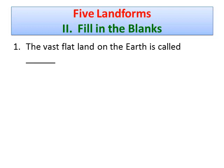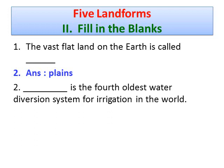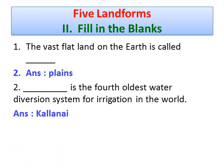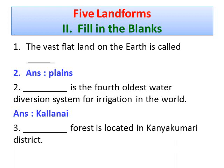Roman number two - Fill in the blanks. Question number one: The vast flat land on the earth is called plains (P-L-A-I-N-S). Question number two: Kallanai (K-A-L-L-A-N-A-I) is the fourth oldest water diversion system for irrigation in the world, built by Karikala Cholan.